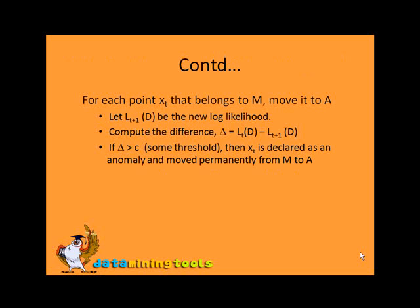For each point XT belonging to M, move it to A. Then let L(T+1)(D) be the new log likelihood. Compute the difference delta, which equals L(D,T) minus the new value L(T+1)(D). If delta is greater than some threshold C, then XT is declared as an anomaly and moved permanently from M to A.